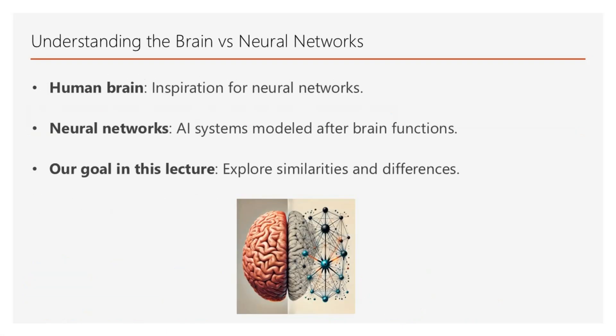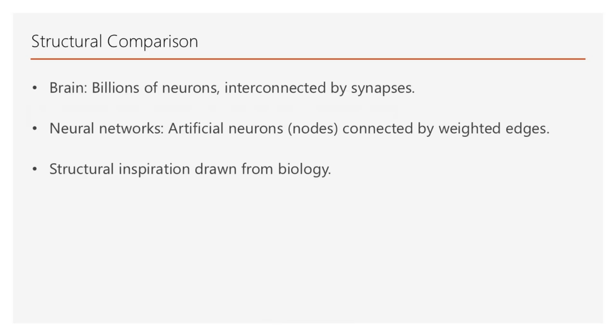To set the beginning for our lecture, we must keep in mind that neural networks are AI systems modeled after brain functions, drawing inspiration from the complexity and efficiency of the human brain. In this lecture, we'll explore the similarities and differences between these systems. So, let's start with the structure.